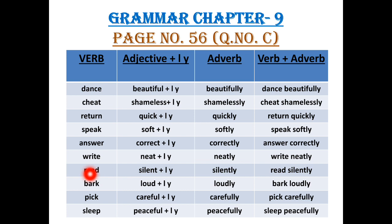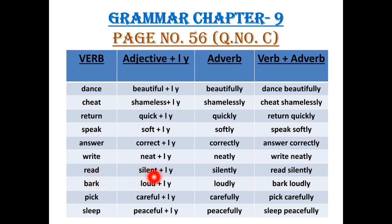The next one is read. Here an adjective is given, that is silent. And when we add L-Y to the word silent, it will become silently. And when we add verb and adverb, it will become read silently. The next one is bark. Here, an adjective is given, that is loud. And when we add L-Y to the word loud, it will become loudly, which is an adverb. When we add verb and adverb, it will become bark loudly.